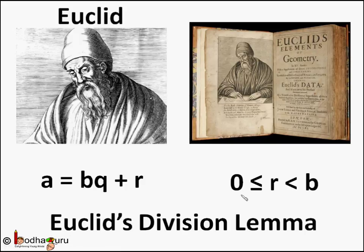A lemma is a proven statement used for proving another statement. Based on this lemma, Euclid developed an easy step-by-step method — an algorithm — to find the highest common factor of two numbers, which we will learn in the next video. Till then, bye bye!